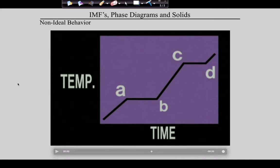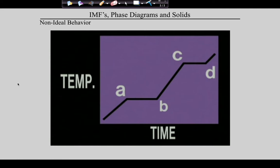Student question: why does it take more energy to boil than to break the structure? When a solid melts, you're simply breaking the structure — the molecules are still associated with each other, just not in a rigid structure. You have to add energy to make that structure collapse. But it takes even more energy to rip those things apart and get them to completely dissociate. So it's less energy to collapse than it is to rip apart.